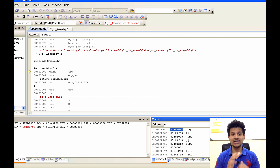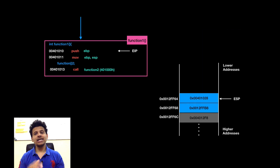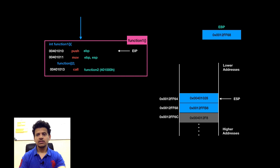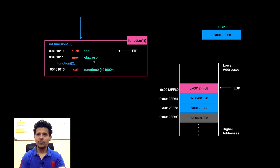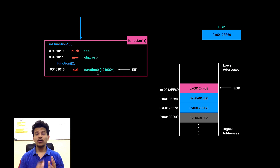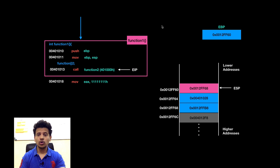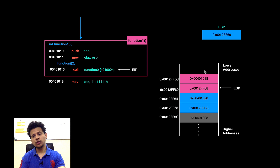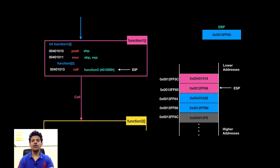Let's look at the same thing in animation format for better understanding. Main called function 1. We are starting execution from function 1. First, it will push EBP onto the stack. EBP is 0x0012FF68, that is the main stack frame pointer, and it will get pushed onto the stack. To set up function 1's stack frame pointer, the value pointed by ESP will be moved into EBP. Now EBP contains 0x0012FF60 and from this point, function 1's stack frame has begun. Next, function 1 is calling function 2. Its assembly code is call function 2. We will push the next instruction address 0x00401018 onto the stack, and after that control will be passed to function 2.